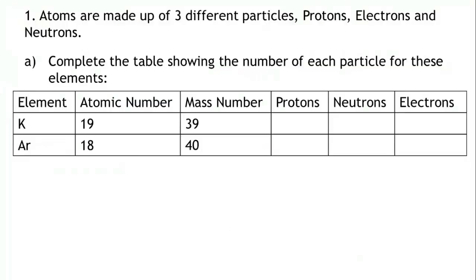Question 1. Atoms are made up of three different particles: protons, electrons and neutrons. Part A. Complete the table showing the number of each particle for these elements.